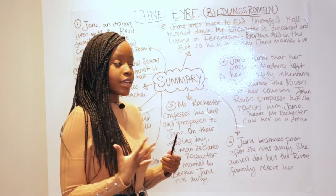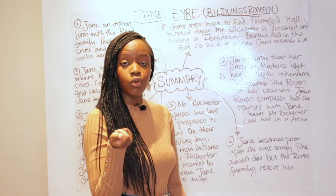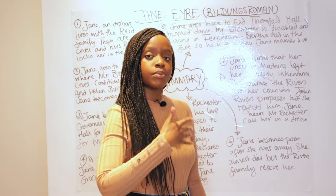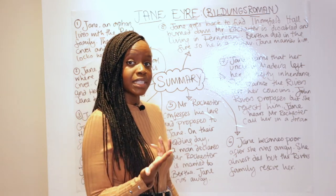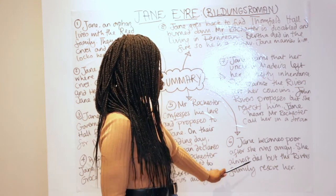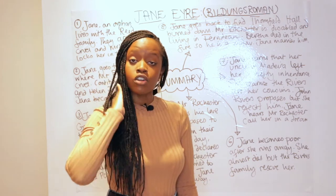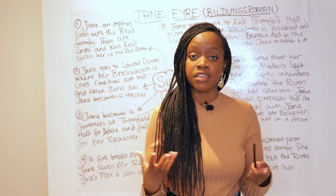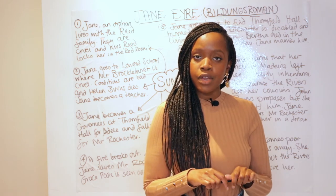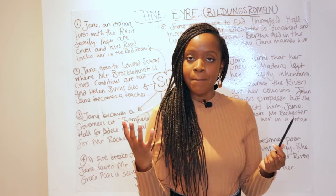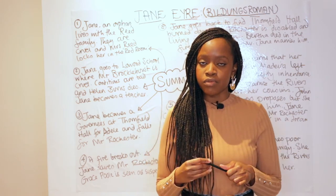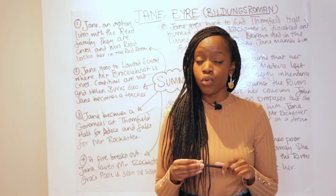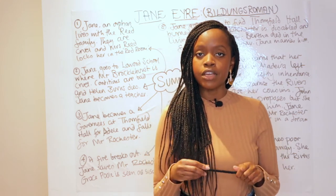Jane becomes very brokenhearted and can no longer live in Thornfield Hall, so she runs away. This is when the story gets very dark — she becomes destitute, uses up all her money on the journey, and falls very sick, nearly dying. She knocks at the door of the Rivers family but the servant initially rejects her, thinking she may be a beggar. However, Mr. John Rivers, the man of the household, lets her in and, along with his sisters, nurses her back to health.